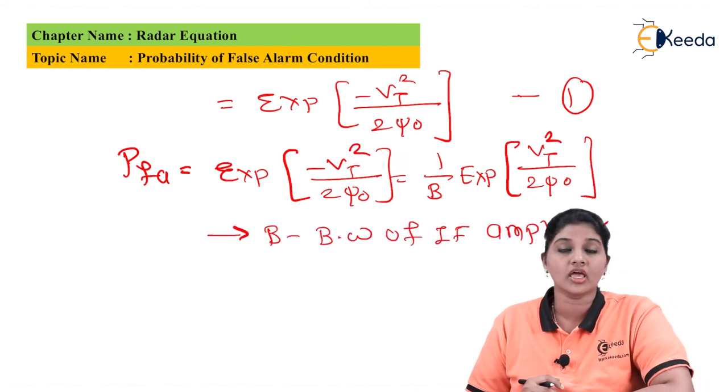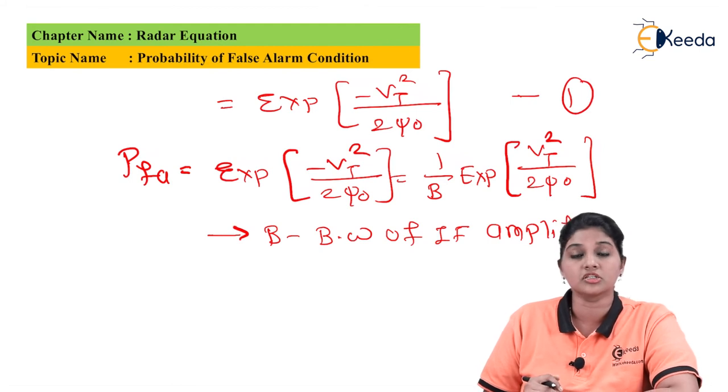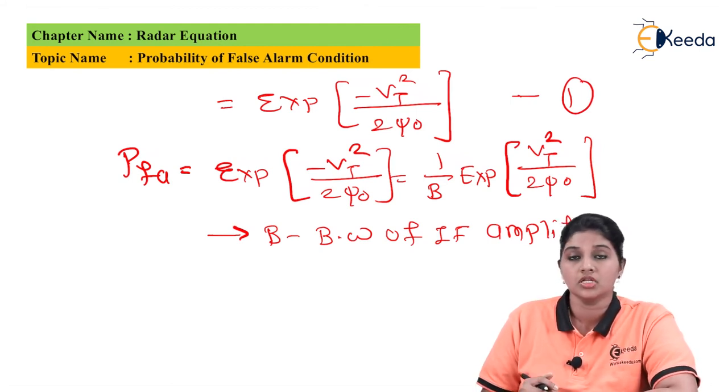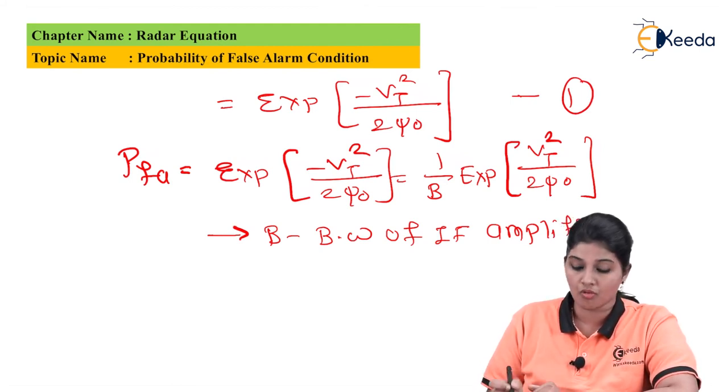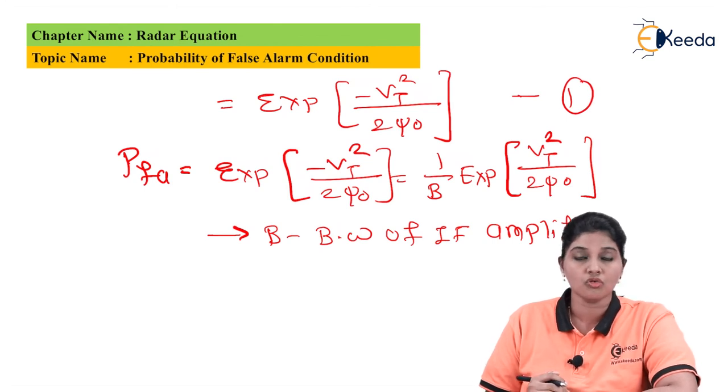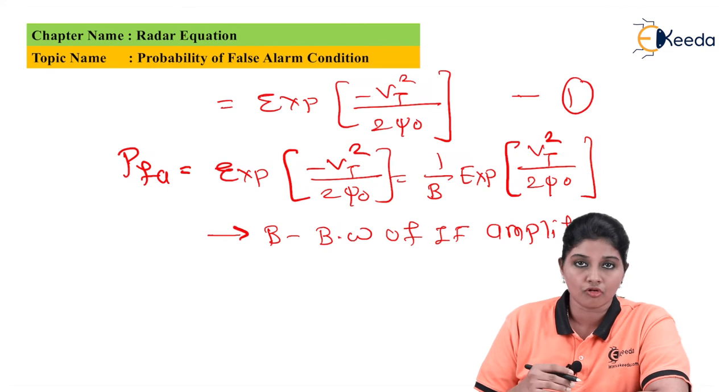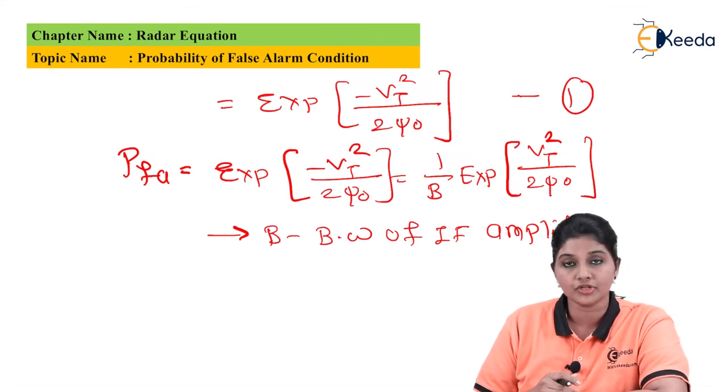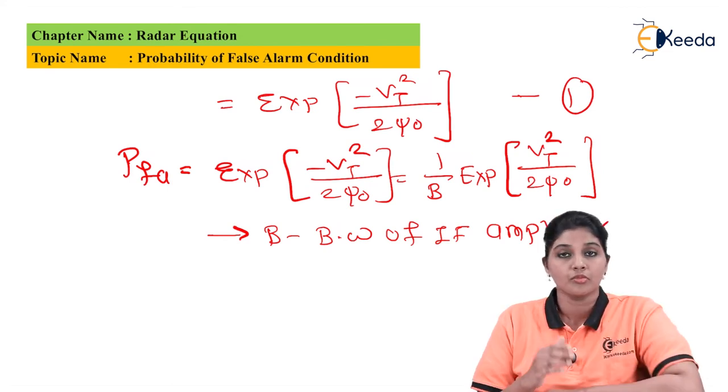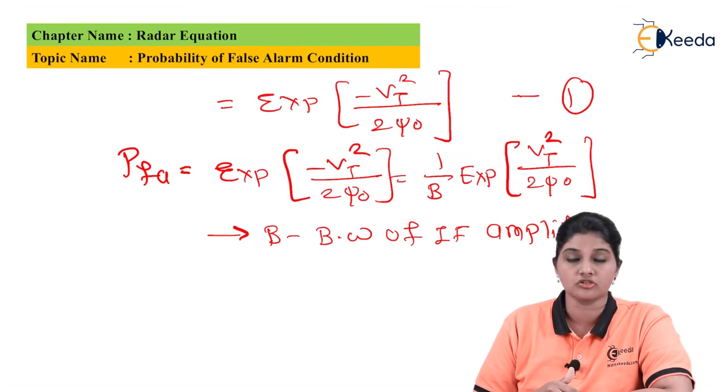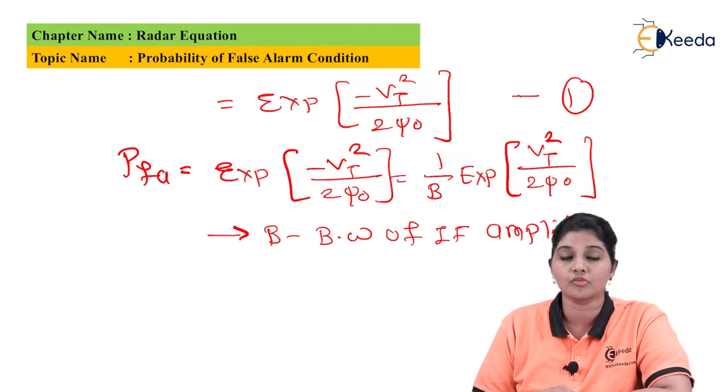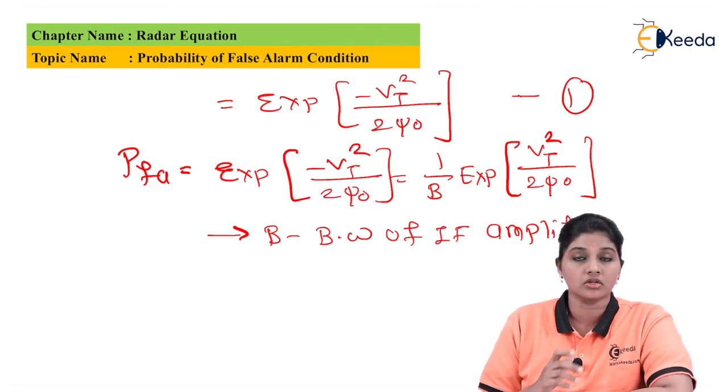So now we can say that we need to first calculate the probability of false alarm, and after finding the probability of false alarm we can find out the probability of misdetected signals. So this is how we can find out the probability of false alarm in the radar system.